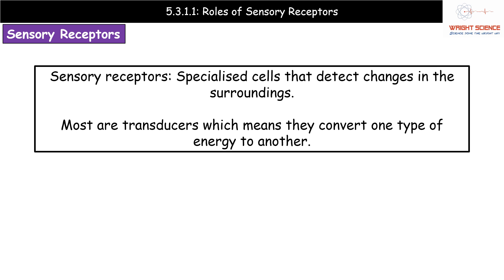The first thing we need to understand is what a sensory receptor actually is. Hopefully we are familiar with this from GCSE where we looked at the nervous system in basic terms. A sensory receptor is a type of specialised cell that detects changes in the surroundings. The vast majority of these sensory receptors are what we term a transducer, meaning they convert one type of energy to another.